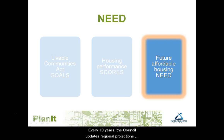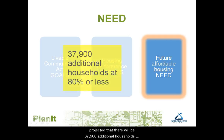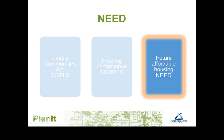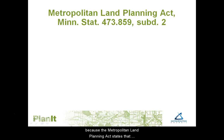Every 10 years, the Council updates regional projections for additional households that will need affordable housing in the coming decade. For the decade between 2021 and 2030, the Council has projected that there will be 37,900 additional households that make 80% or less of the area median income and will therefore be in need of affordable housing. Based on state statute, the Metropolitan Land Planning Act states that cities must plan for their share of that need in their comprehensive plan.